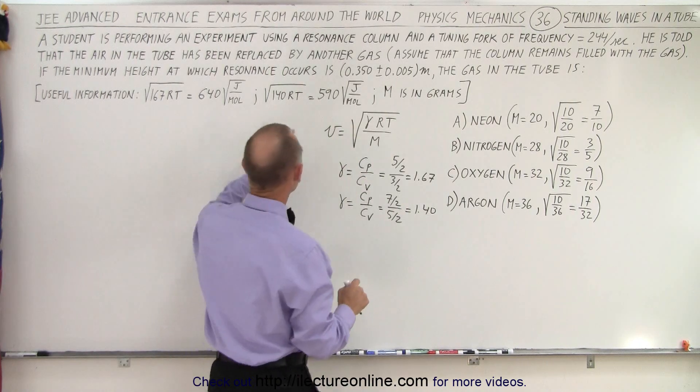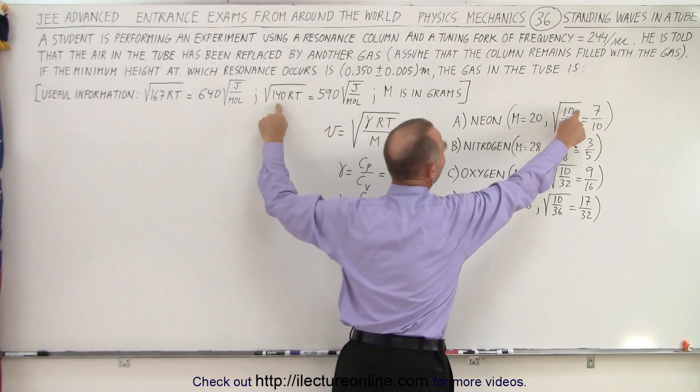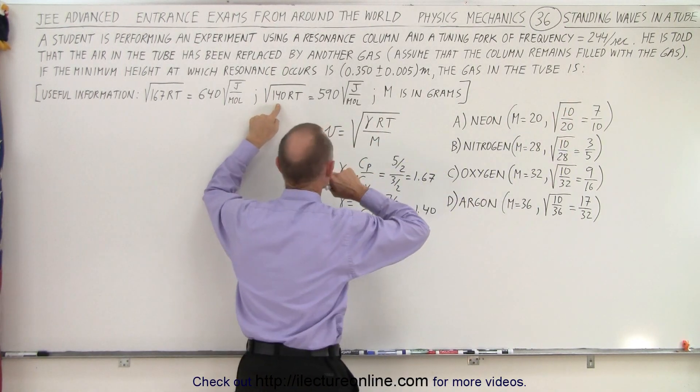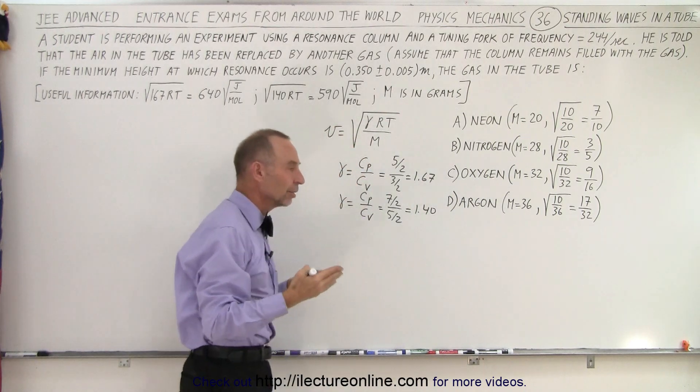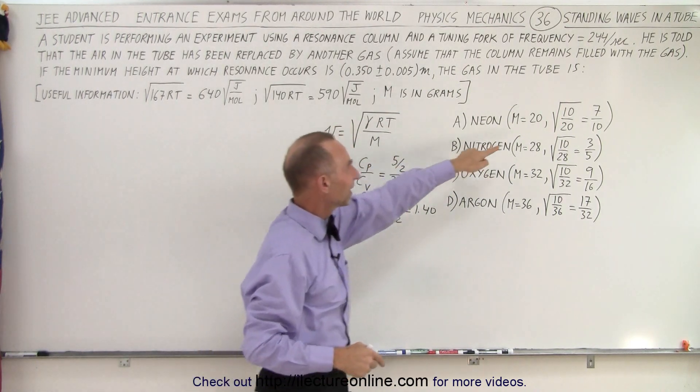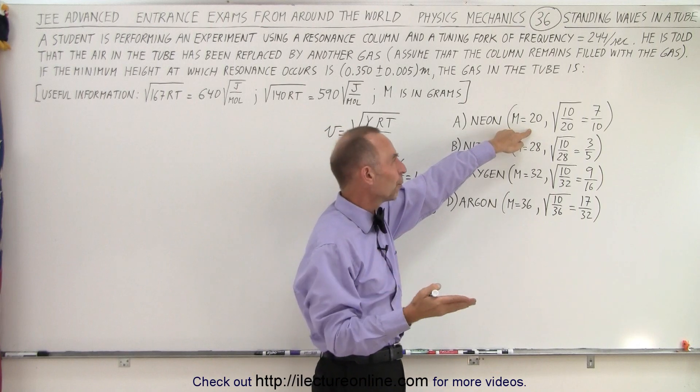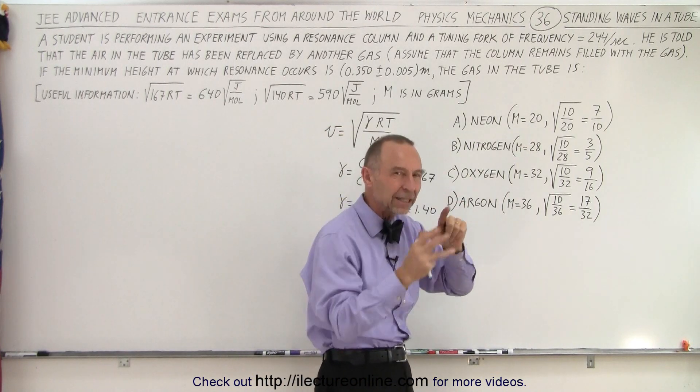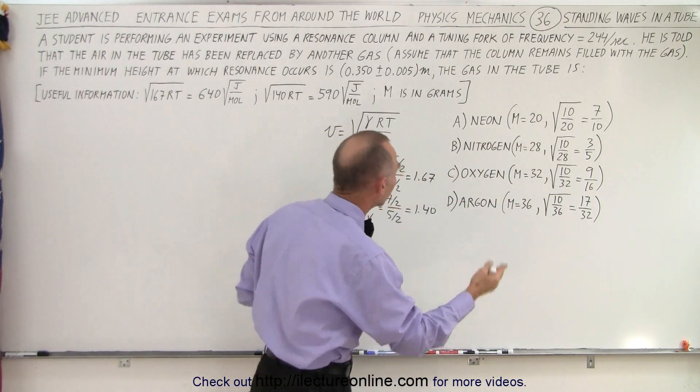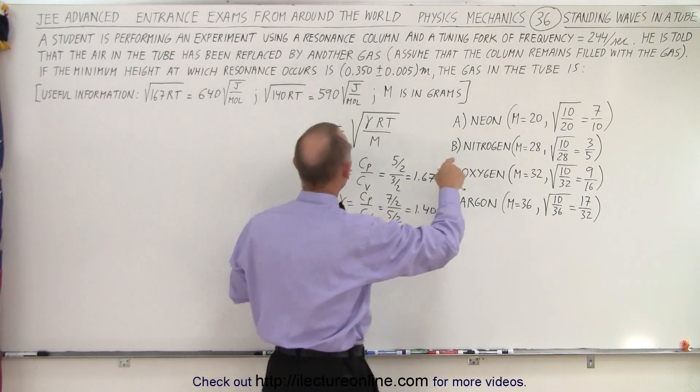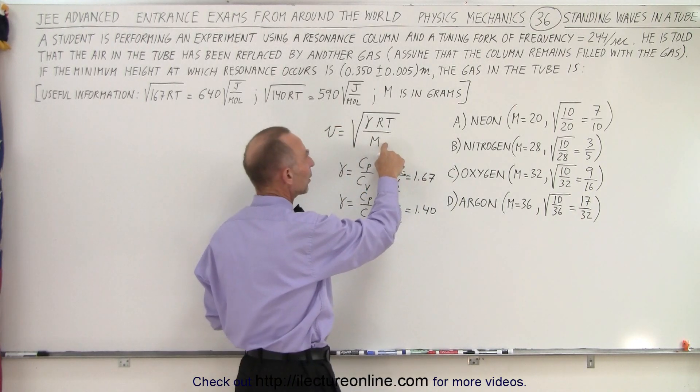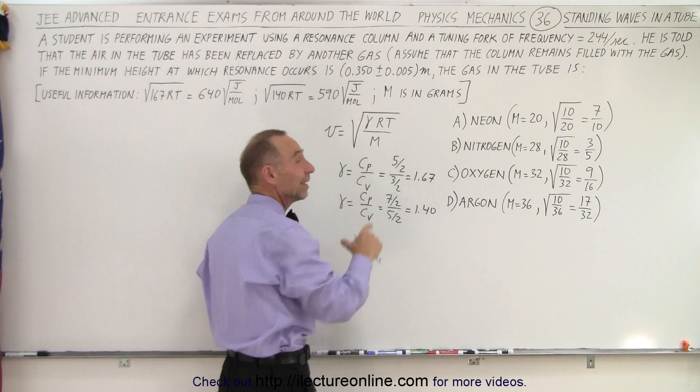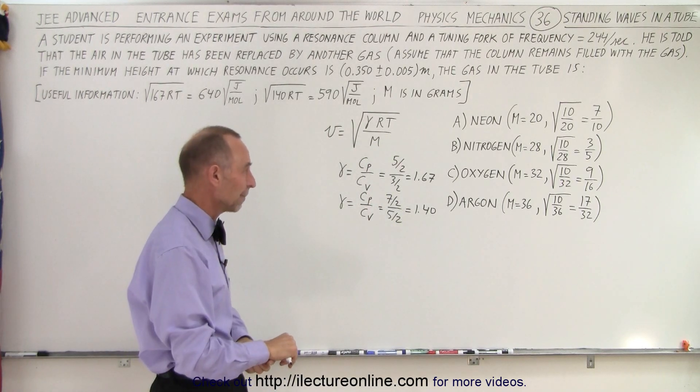Notice that if you take 140 times 10, you get 1400. And 1400 divided by the molar mass in grams compensates for normally putting the molar mass in kilograms. So in the denominator we could put the molar mass in grams instead of kilograms.